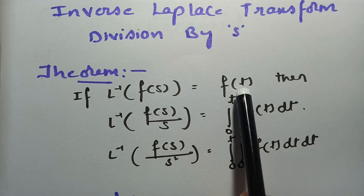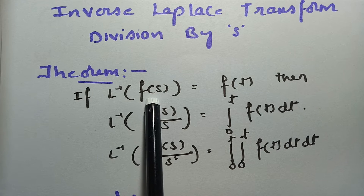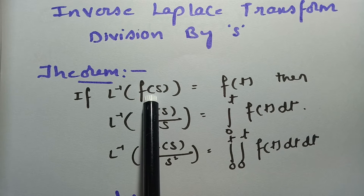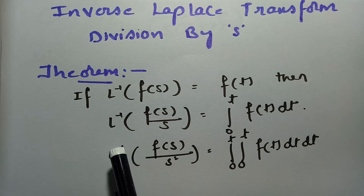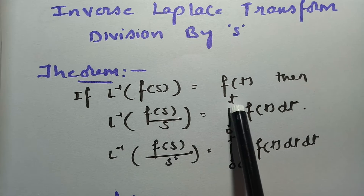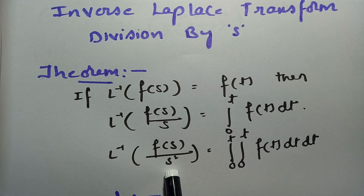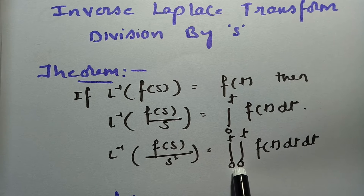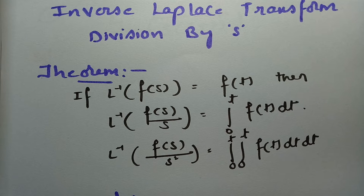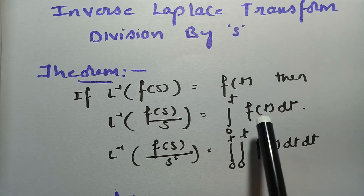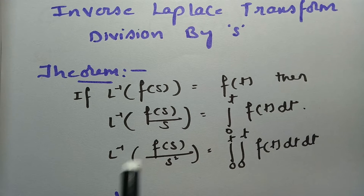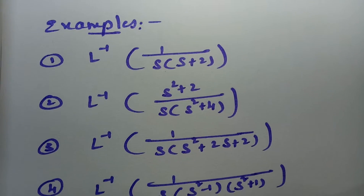We get f(t) from the inverse Laplace transform of F(s). The inverse Laplace transform of F(s)/s equals the integral from 0 to t of f(t) dt. If F(s) is divided by s two times, you have to integrate twice. Remember: if it's multiplication — s·F(s) — you differentiate; if it's division, you integrate. That is the key difference.